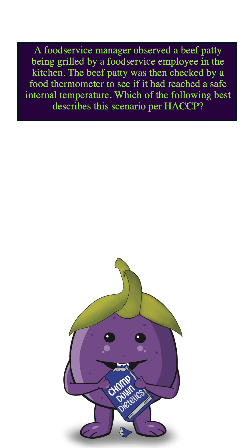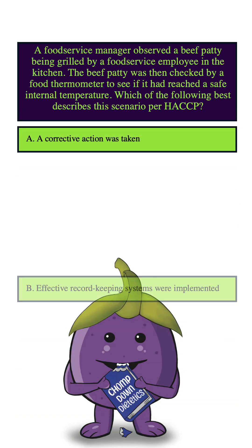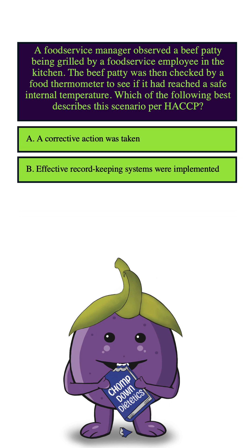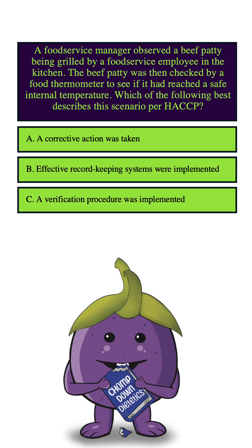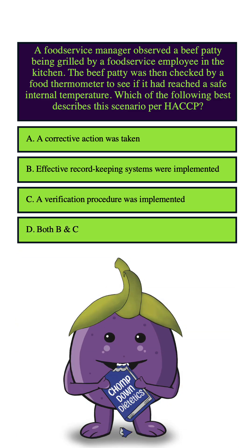A food service manager observed a beef patty being grilled by a food service employee in the kitchen. The beef patty was then checked by a food thermometer to see if it had reached a safe internal temperature. Which of the following best describes this scenario per HACCP? A. A corrective action was taken. B. Effective record-keeping systems were implemented. C. A verification procedure was implemented. D. Both B and C.